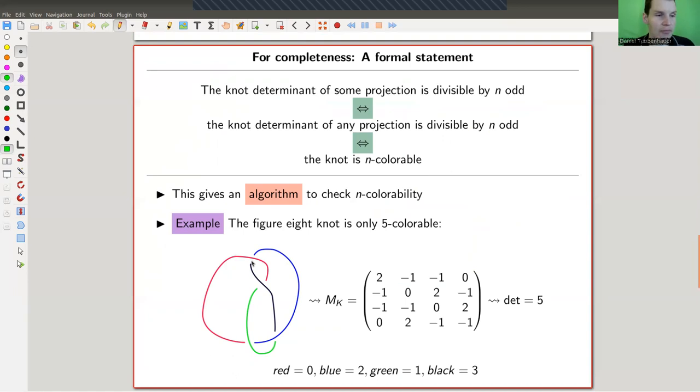So for this guy, for example, you would write down the matrix, you check that the determinant is five, right, three doesn't divide five. So it doesn't allow a three coloring, it doesn't allow seven coloring either, or an 11 coloring or whatever. But it does allow a five coloring, because the determinant is five, that's clearly divisible by five.